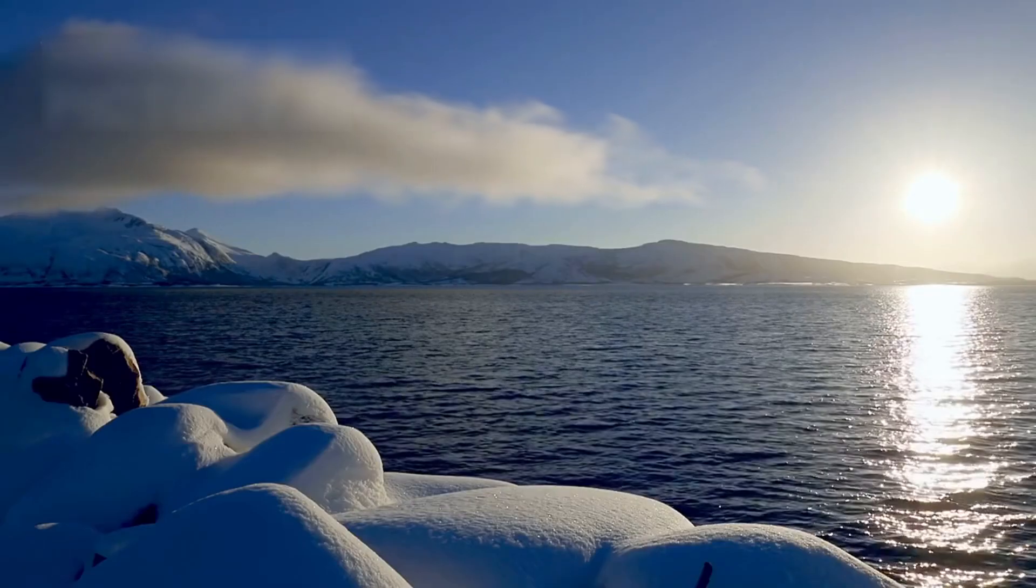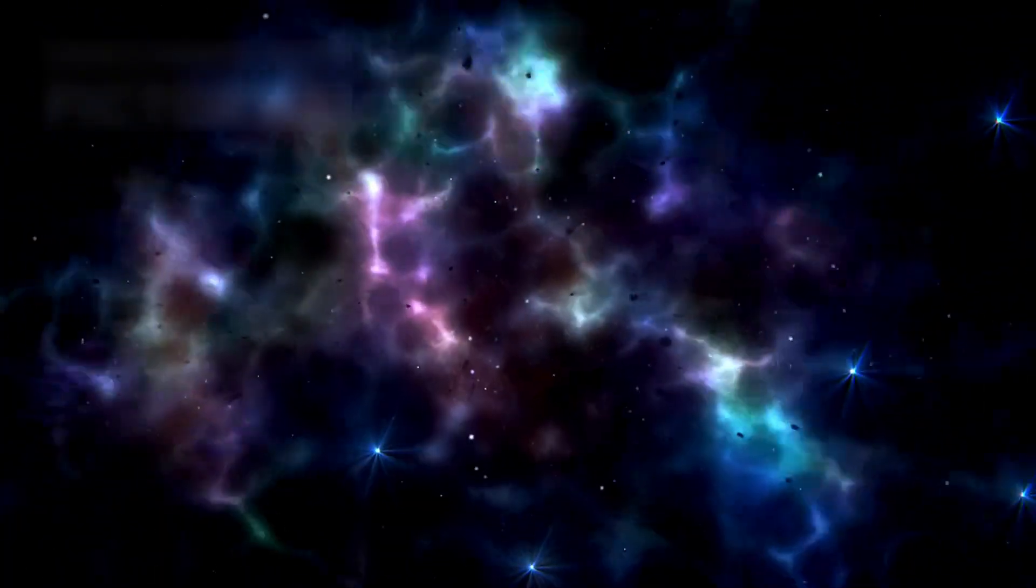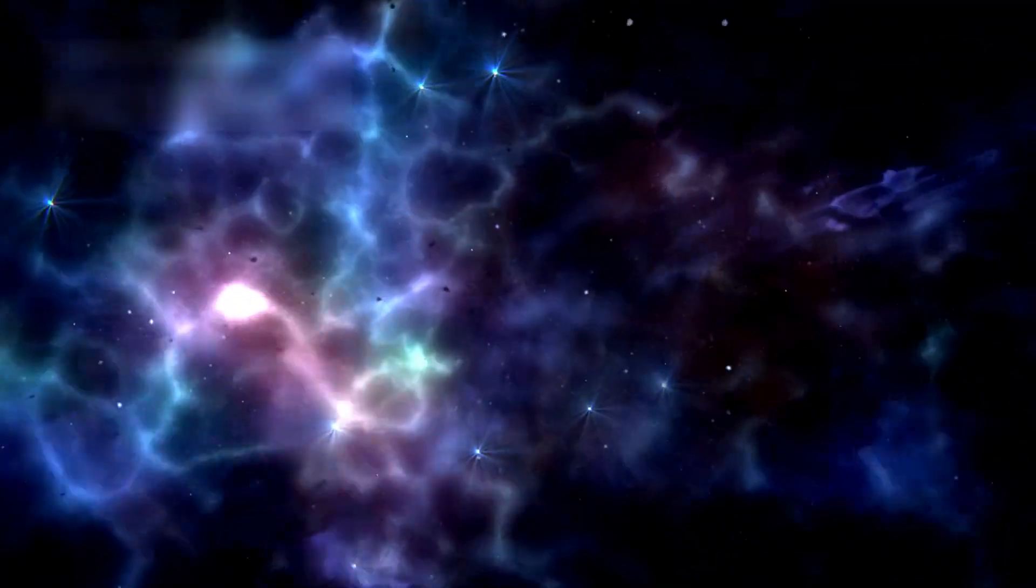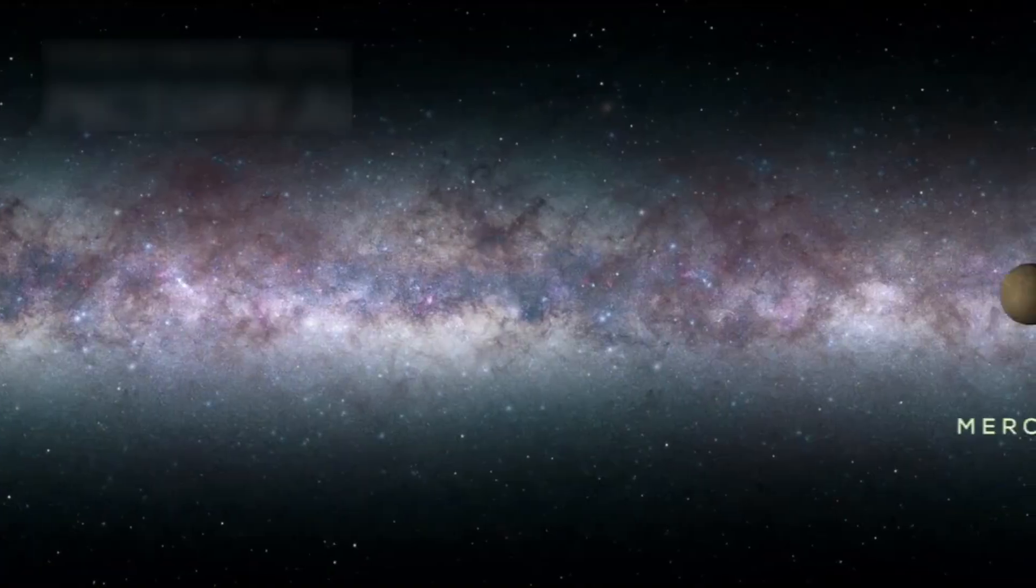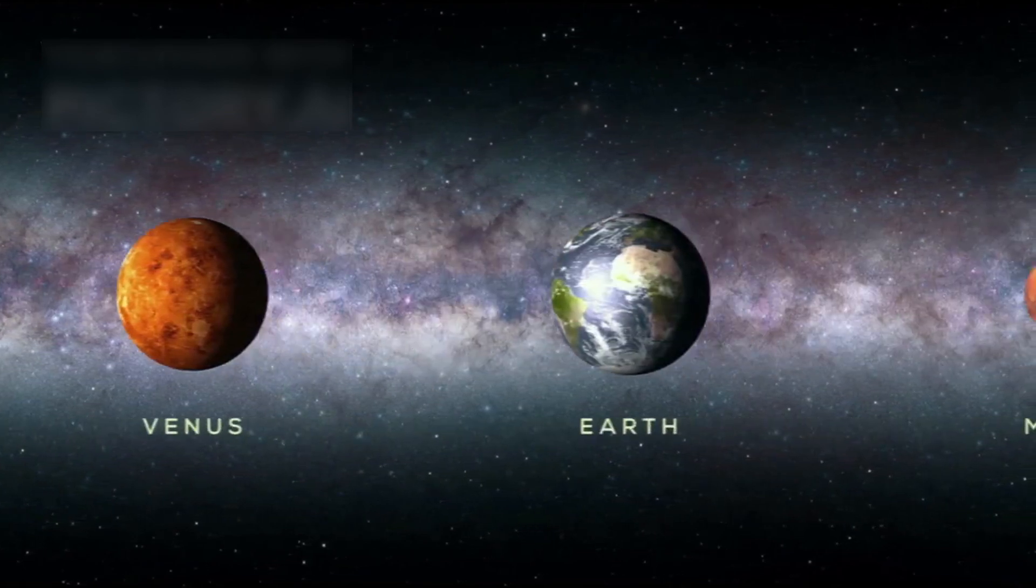It's heading toward the Oort cloud, a far-off icy shell. It will take 300 years to enter it and 30,000 years to pass through. These timelines underscore the scale of our solar system, almost unfathomable in human terms.